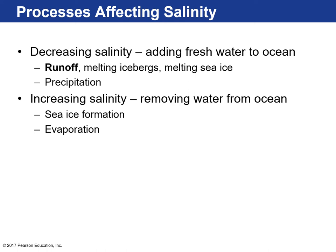Processes that decrease salinity involve adding fresh water: rain or precipitation lowers sea surface salinity, as does river runoff and melting icebergs or sea ice. Processes that increase salinity involve removing water from the ocean — evaporation takes water molecules into the gas phase and leaves behind more concentrated salt. In cold areas where sea ice forms, ice doesn't include any dissolved solids in its structure, so when ice forms it's like removing water — the remaining liquid becomes saltier.